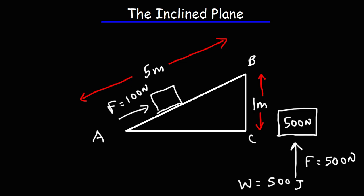Now we can go from A to B which requires less effort, but we're going for a longer distance. If we calculate the work going from A to B, that's 100 Newtons times five meters, which is also 500 joules.